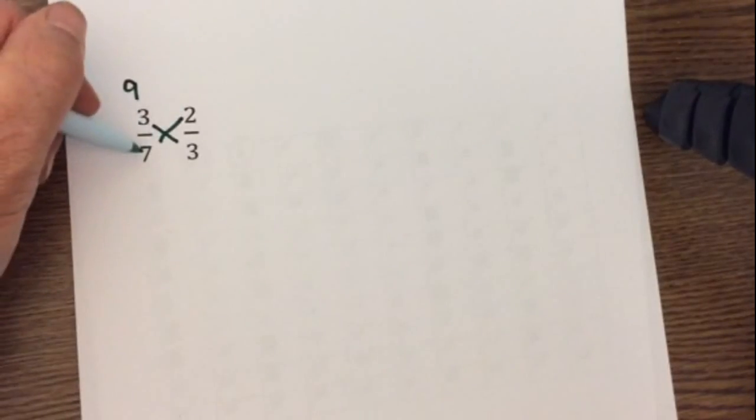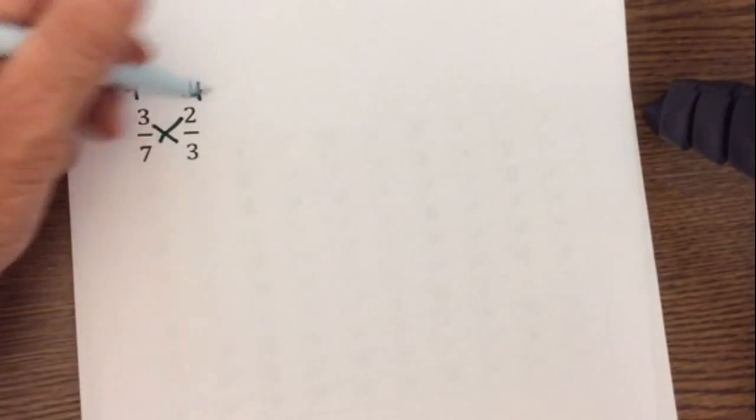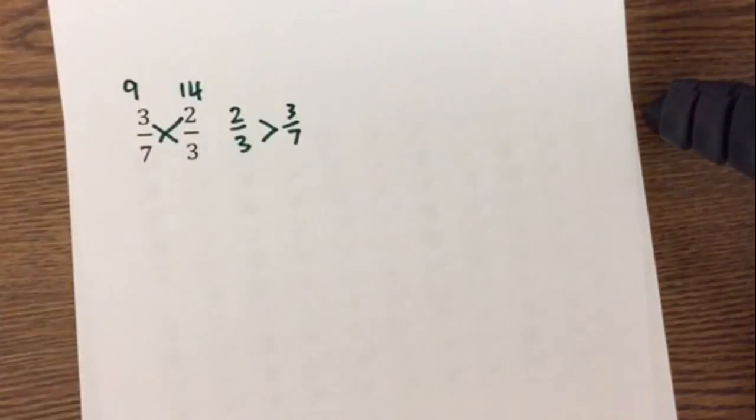Let's go ahead and look at one more example. We have 3 sevenths and 2 thirds. I glance, denominators are different, 7 minus 3 is 4, so I can't use that, so I'm going to have to cross multiply. 3 times 3 is 9, 2 times 7 is 14, so 2 thirds is greater than 3 sevenths.